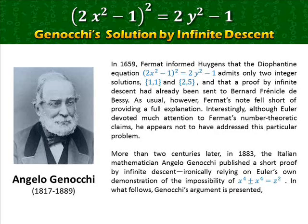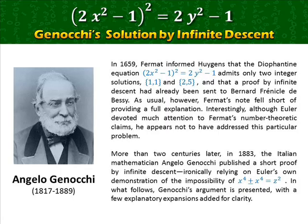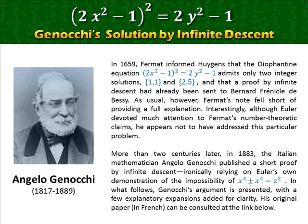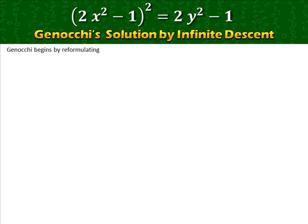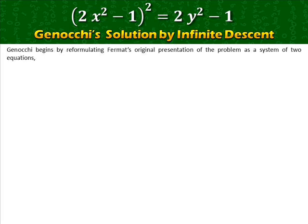In what follows, Genocchi's argument is presented with a few explanatory expansions added for clarity. His original paper can be consulted at the link below. Genocchi begins by reformulating Fermat's original presentation of the problem as a system of two equations, from which the equation — the square of (2x² − 1) equals 2y² − 1 — is obtained.